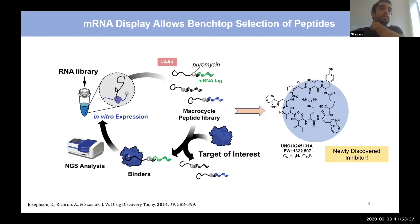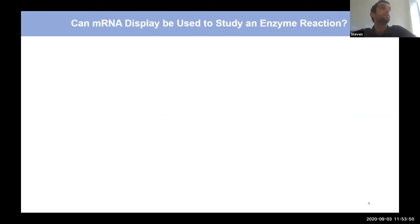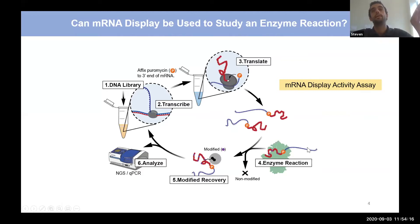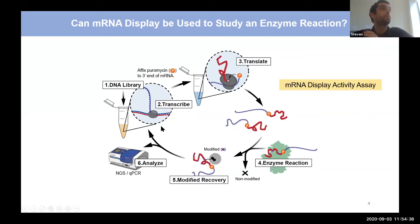I'm interested in enzyme reactions performed on peptides. We thought maybe we could rework this assay to study an enzyme. Can mRNA display be used to study an enzyme reaction? The process would be much the same to create the RNA libraries, but instead of designing the library to bind a specific enzyme target, we design these peptide-RNA libraries to be substrates for a specific peptide-modifying enzyme. We add the enzyme to the library, it modifies some peptides, and through a clever selection process we pull out only modified substrates, wash away non-modified ones, and measure enzyme activity based on next-generation sequencing.